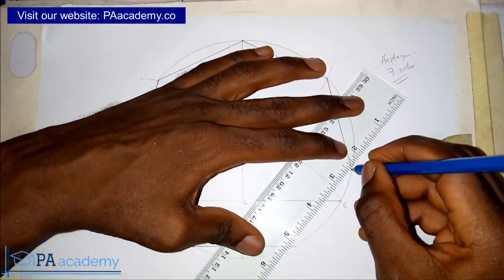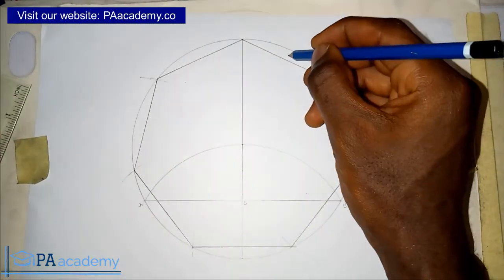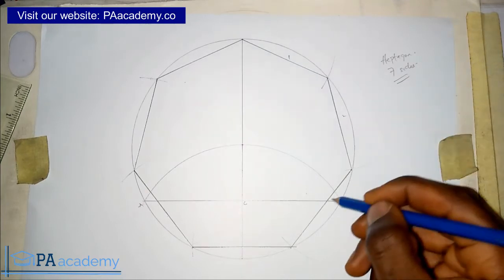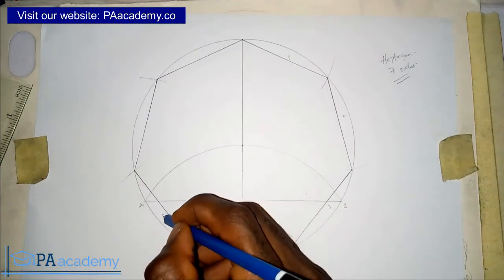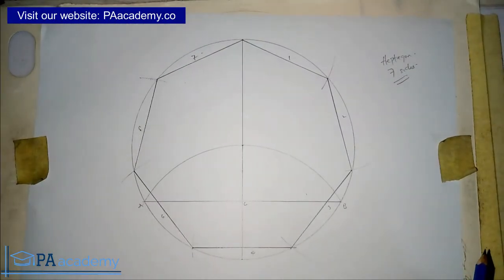And then for the last side. Now we already have six sides - this is one, two, three, four, five, six, I mean seven sides rather. We have seven sides which represents the heptagon. This is how you go about if you are asked to draw a regular heptagon.